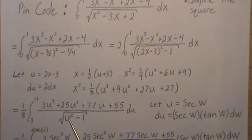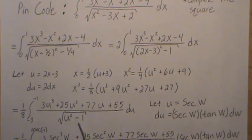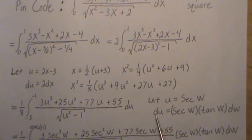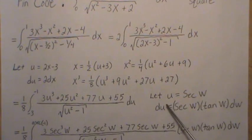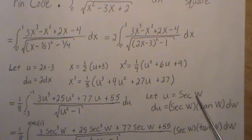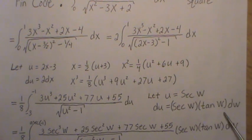Now, based on the fraction, we have a one-eighth out front. The two went away. Now we want to do another variable change, a trigonometric change. Let's let u equal the secant of w. That means du is equal to the derivative of secant of w, which is secant of w times tangent of w, dw.